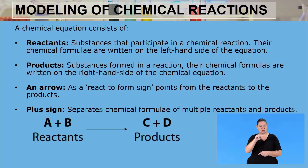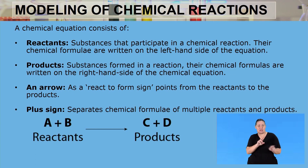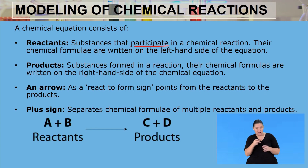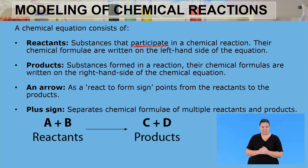A chemical reaction consists of the following things. Number one: reactants. Reactants are substances that participate in a chemical reaction, and their chemical formulas are written on the left-hand side of an equation.